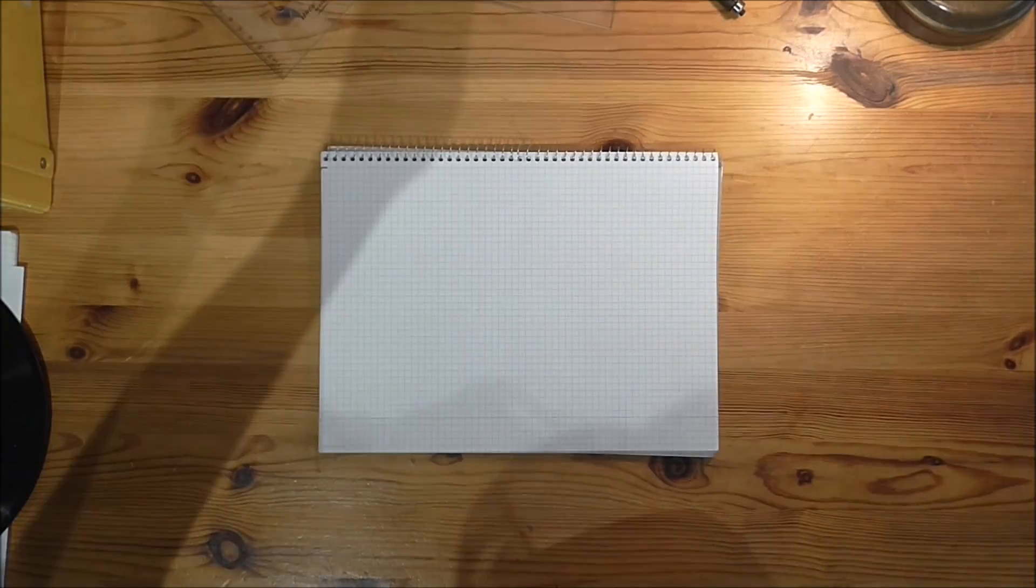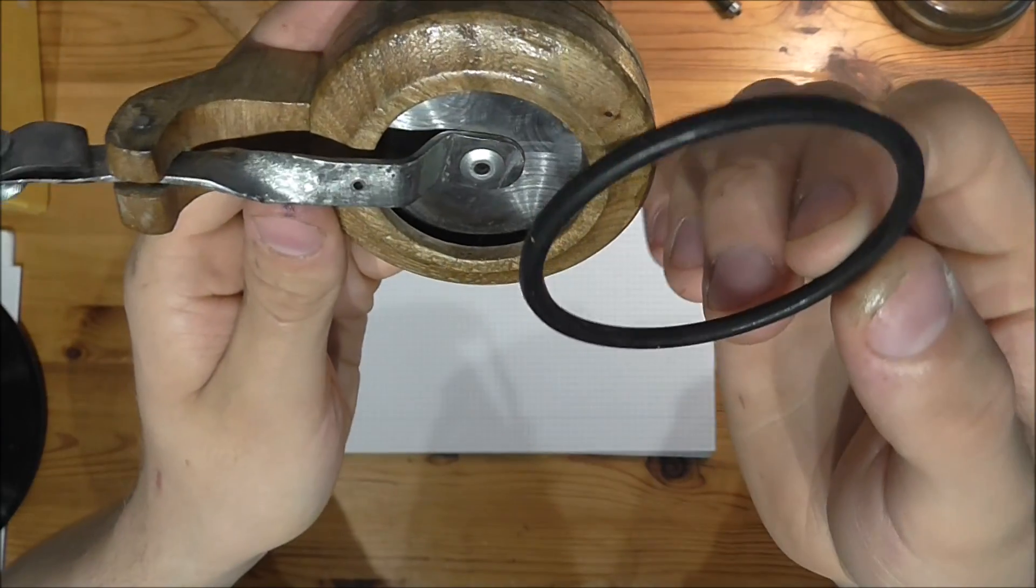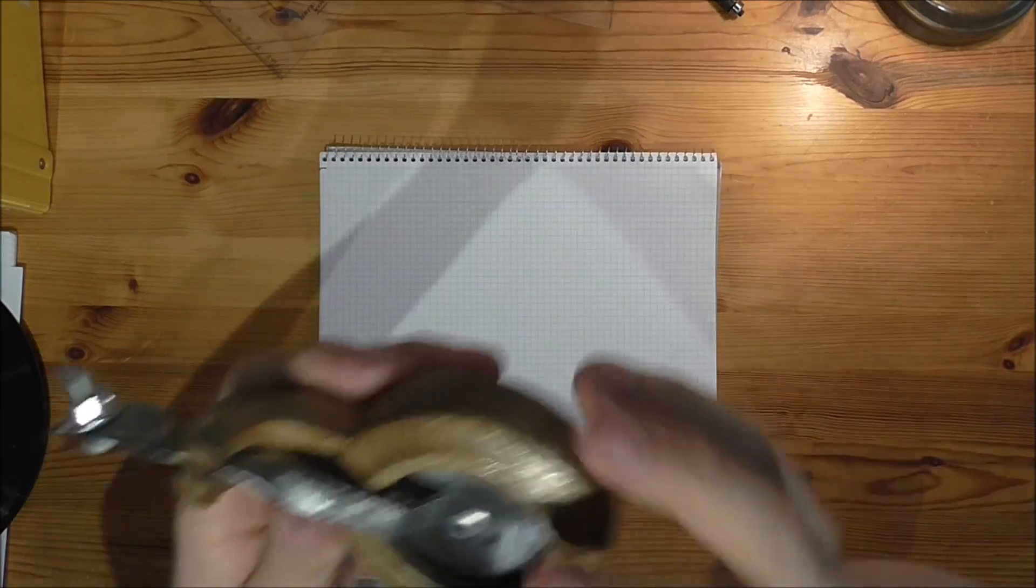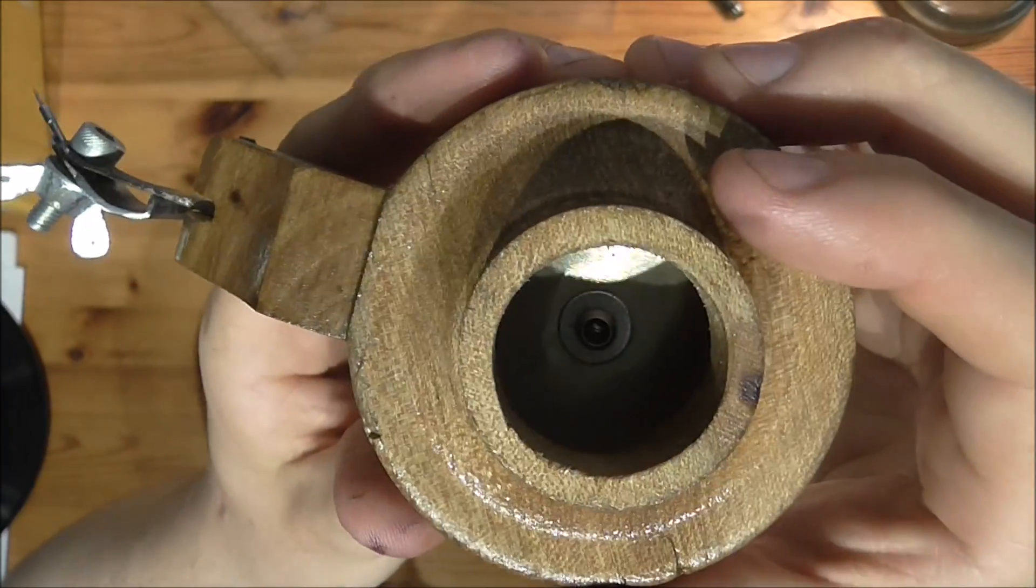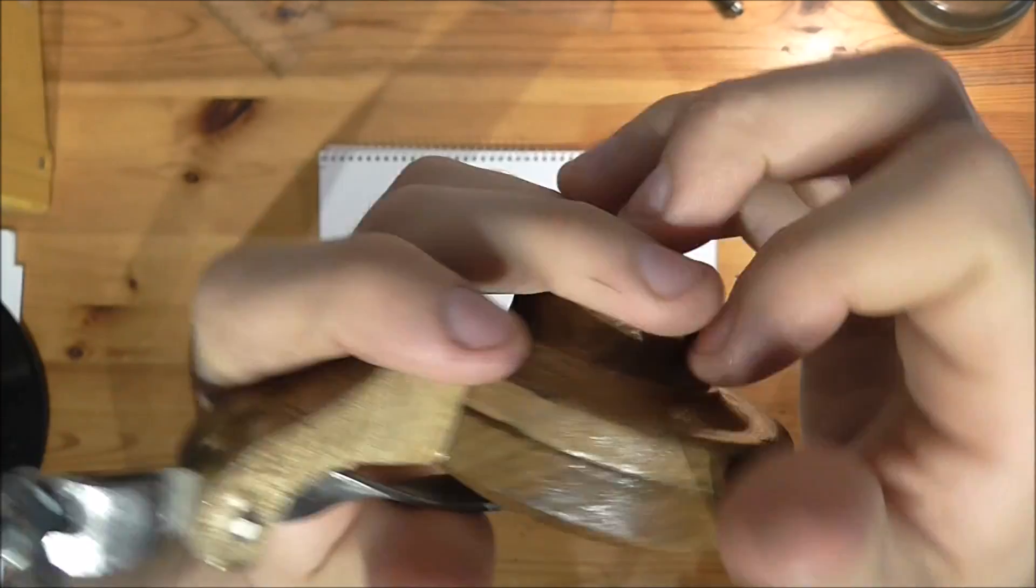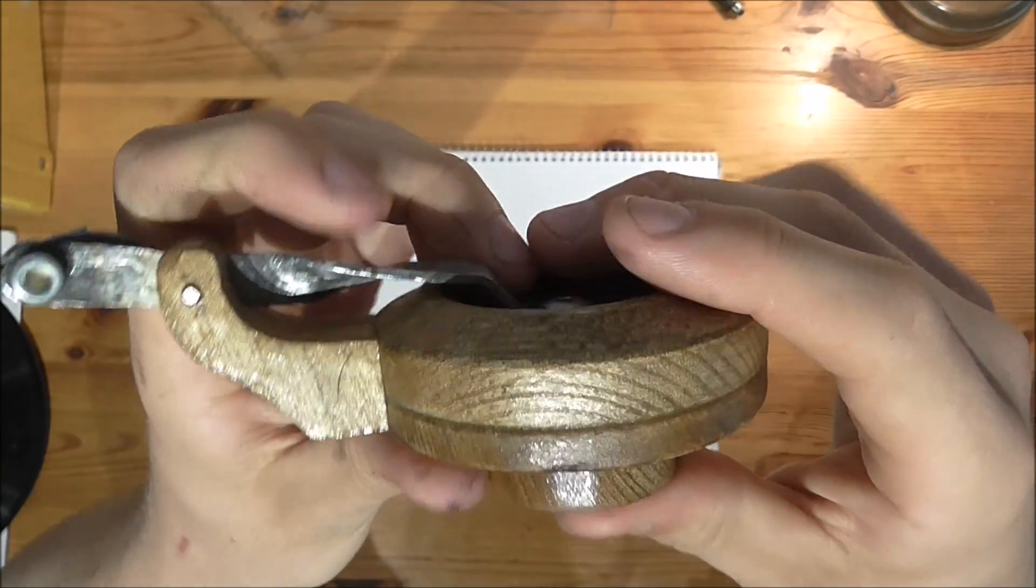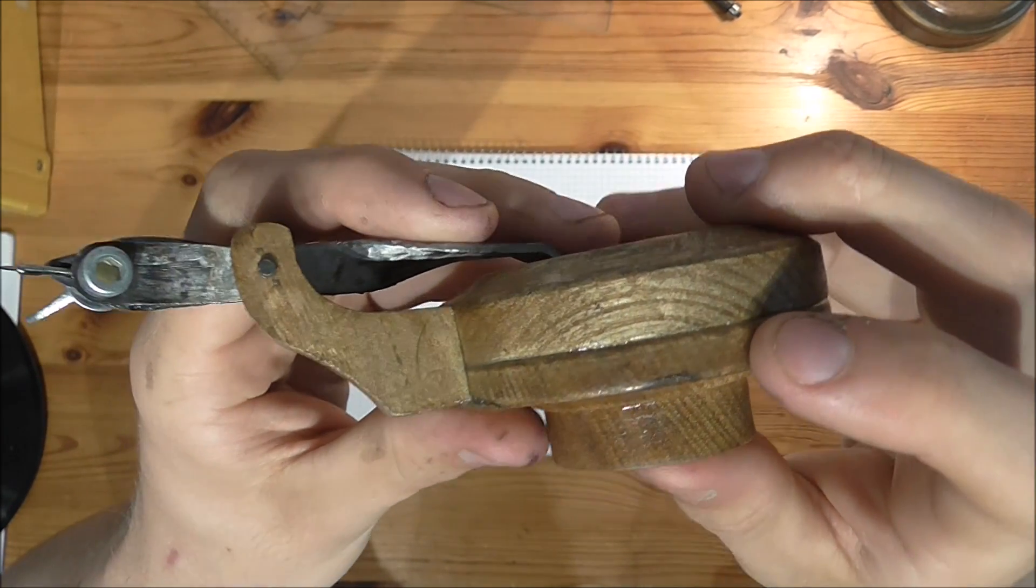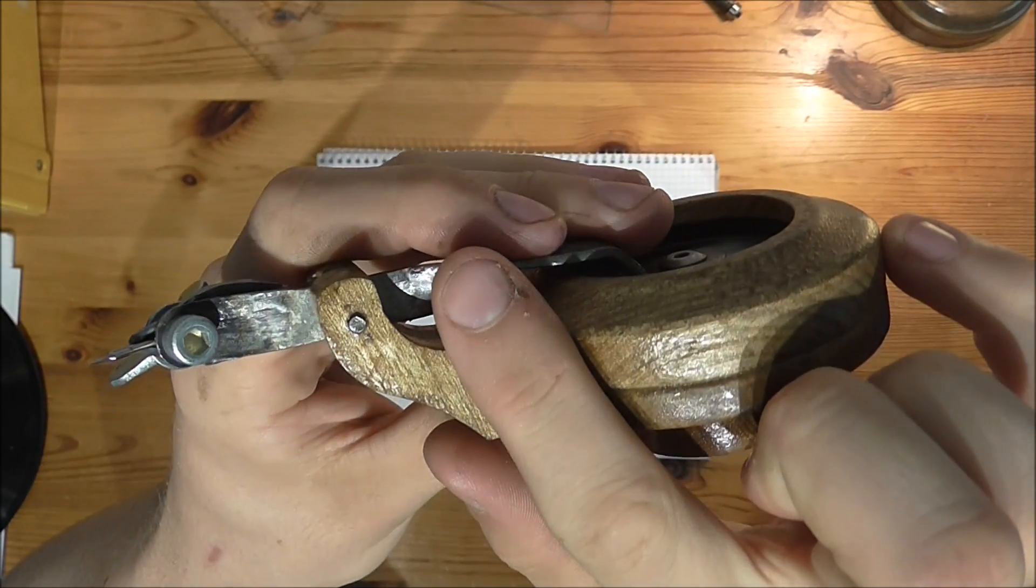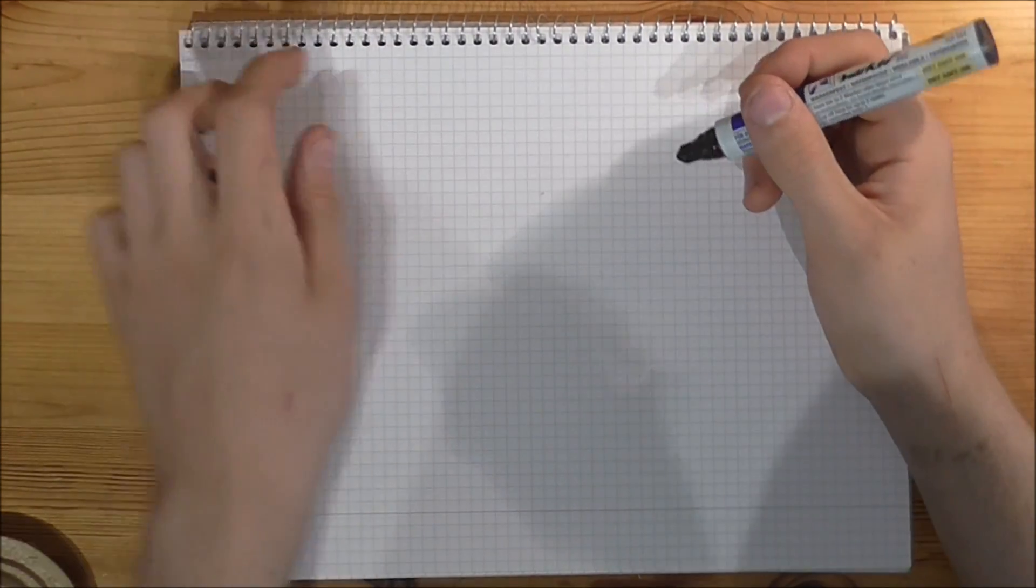Then we have the sound box itself, the upper piece, the lower piece, and the support for the arm.